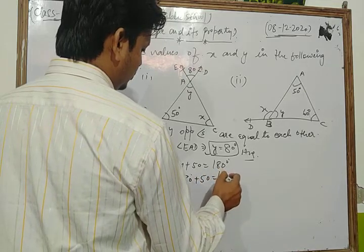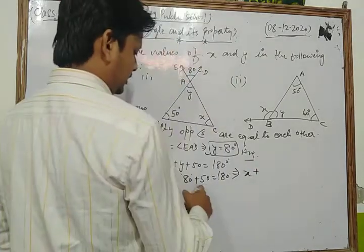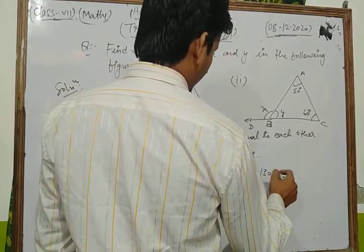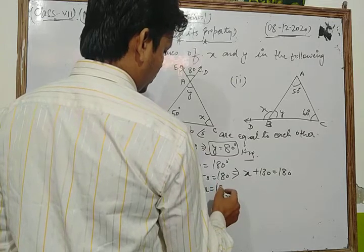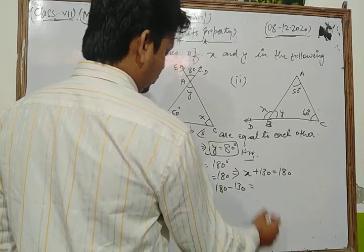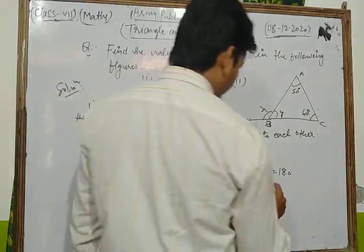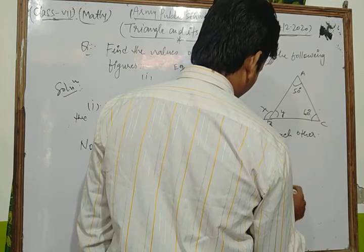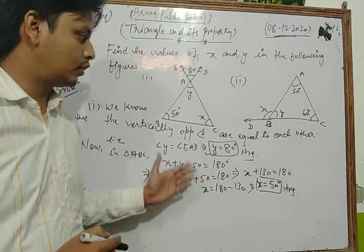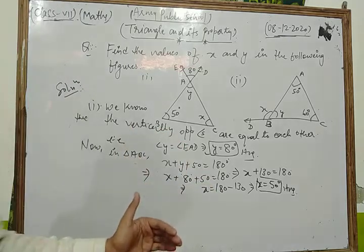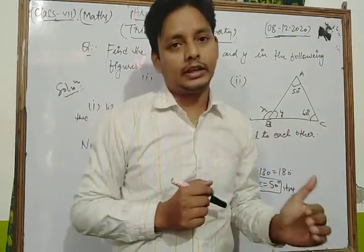So x equals 180 minus 130, which gives us x equal to 50 degrees. This is the answer. In this way you can solve this type of question by applying the angle sum property of the triangle.